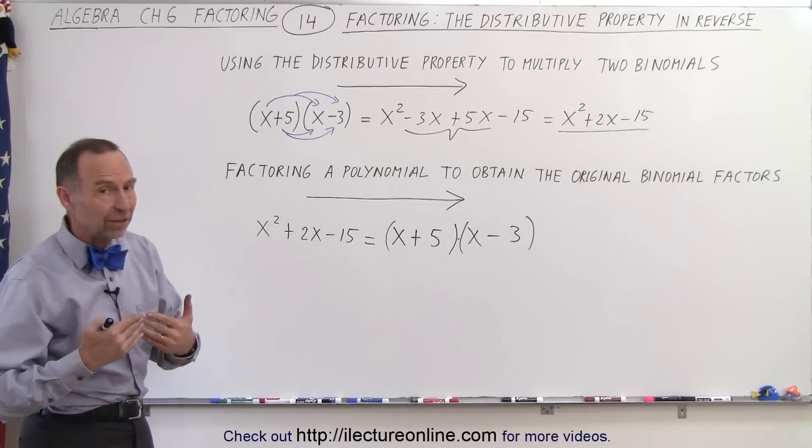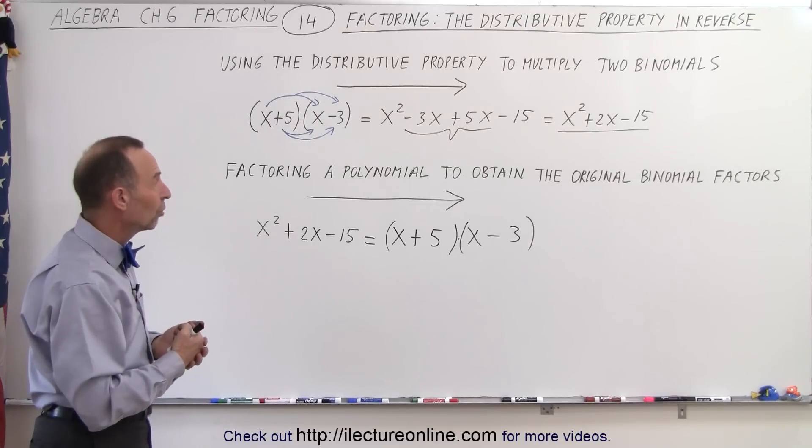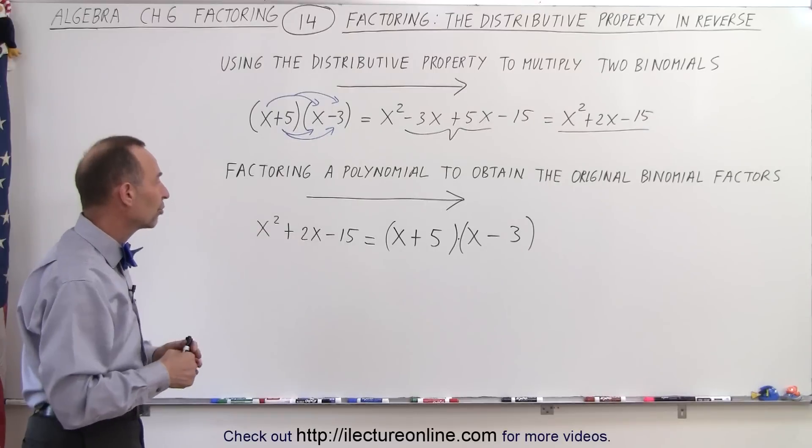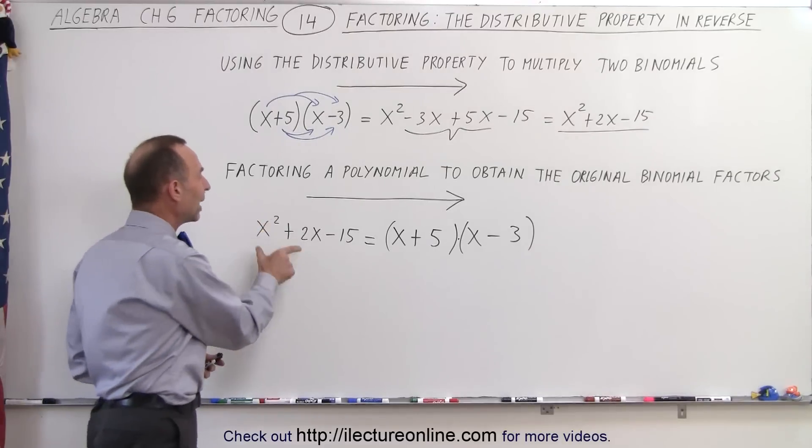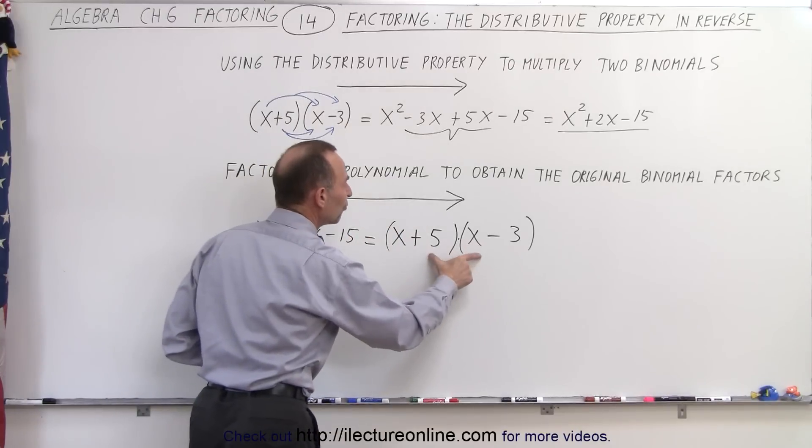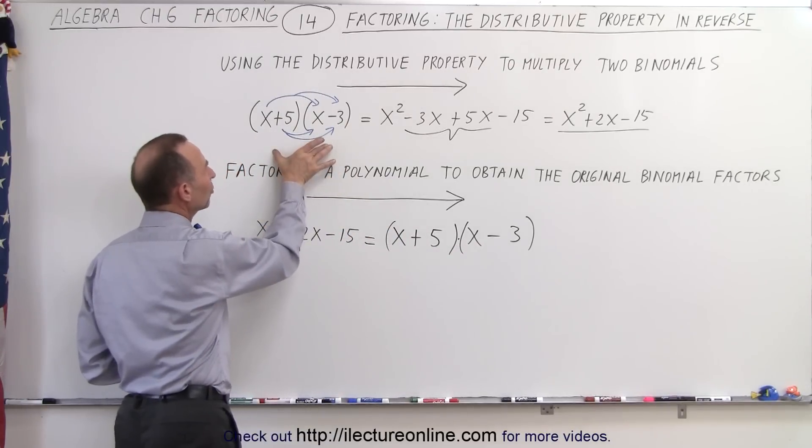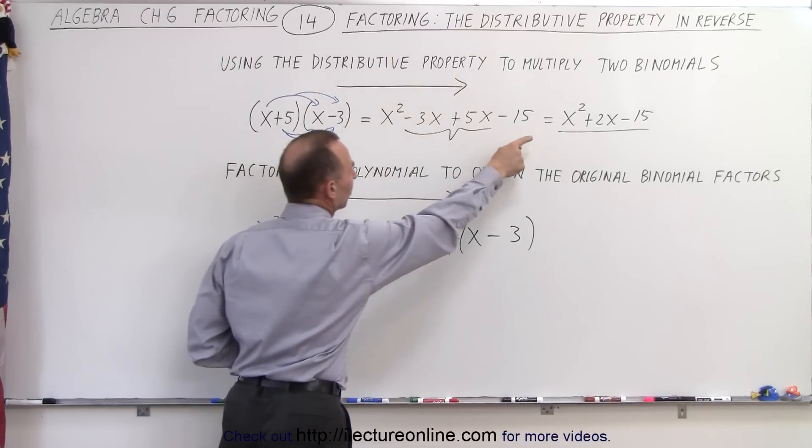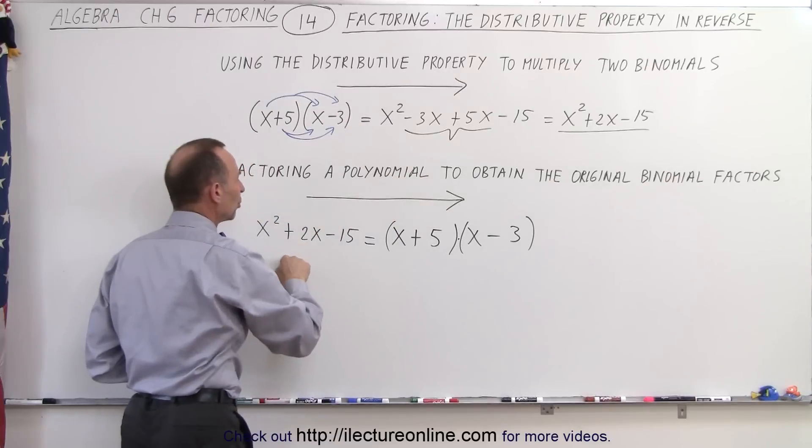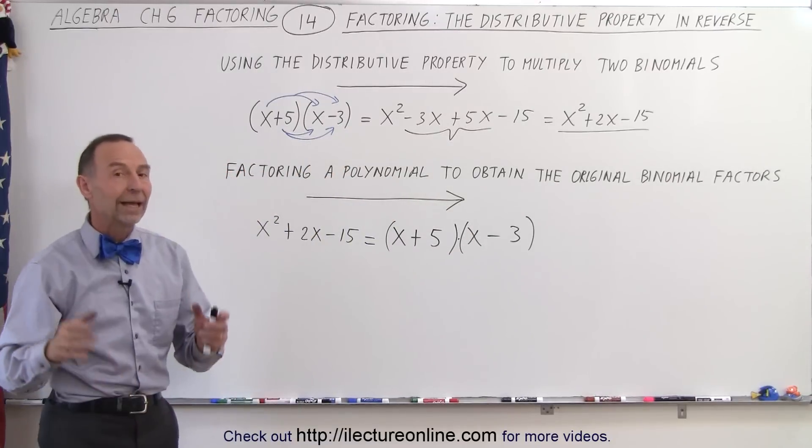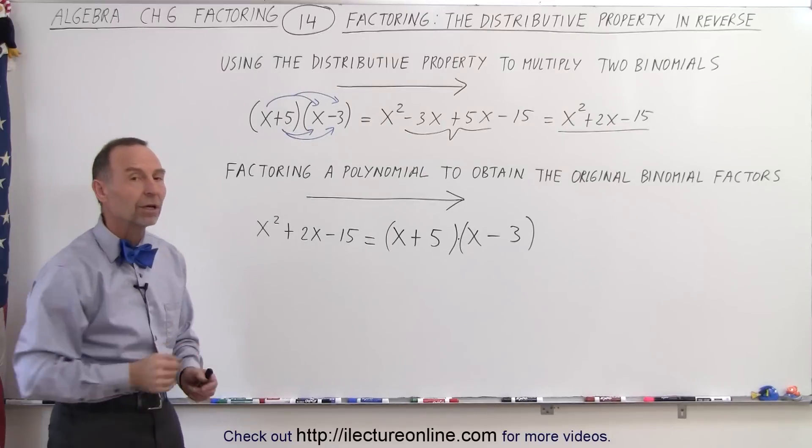But at least now we understand what it actually means to factor a polynomial or to factor a binomial or trinomial. It's simply writing it as the product of two factors in binomial format, which means if you have two binomials and we multiply them together, we get the polynomial. We take the polynomial and then factor it—we get back the original binomials. And that is what we mean by factoring a polynomial.